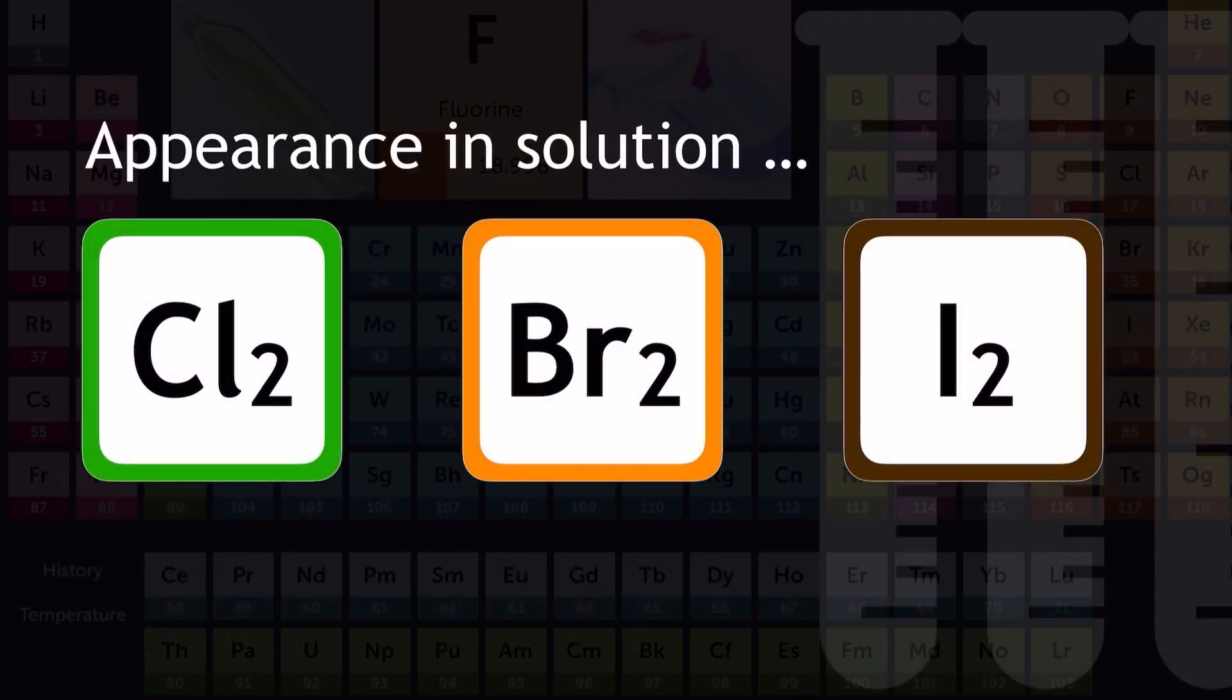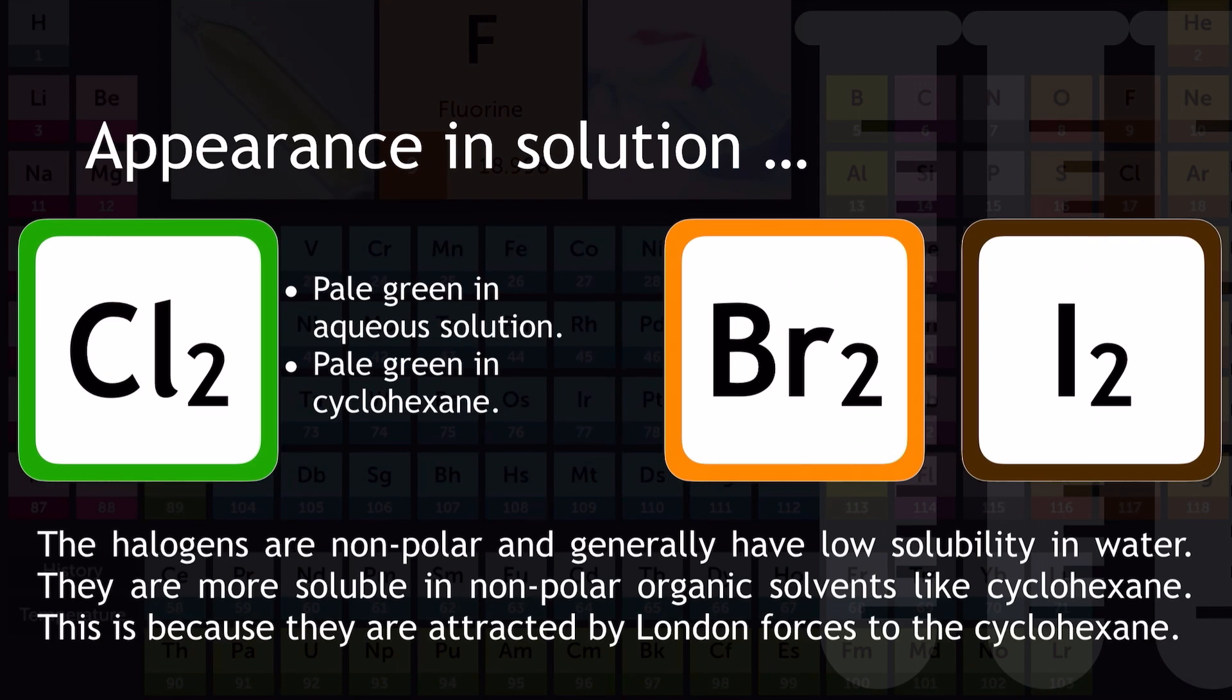We also need to talk about how these three halogens appear in solution. Now we're not just talking about how they appear in aqueous solution, we're going to be talking about how they appear in solution with a non-polar organic solvent, like cyclohexane. The halogens are non-polar, and therefore generally have low solubility in water, which is a polar solvent. They're much more soluble in non-polar organic solvents like cyclohexane, and this is because they are attracted by London forces to the cyclohexane molecules.